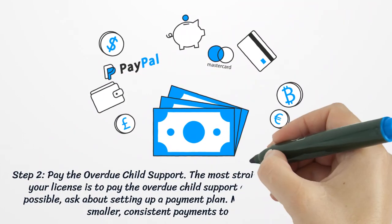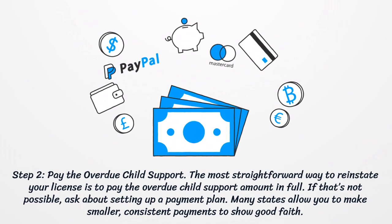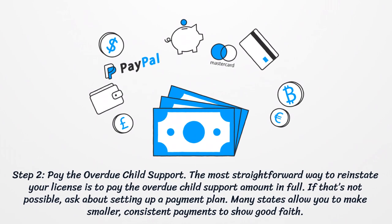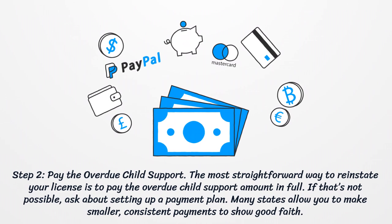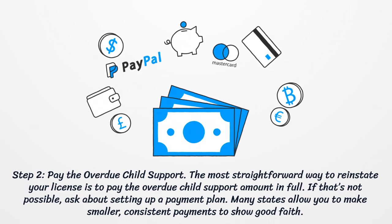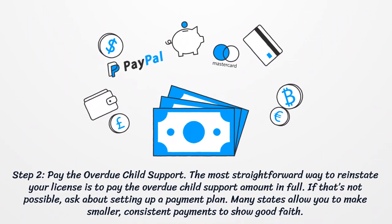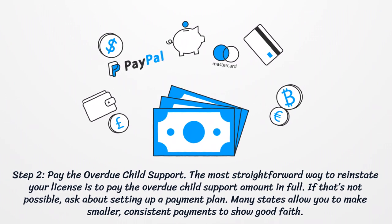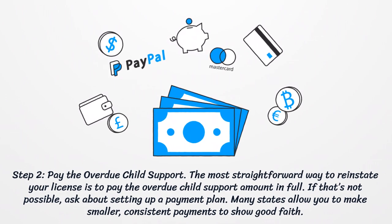Step 2: Pay the overdue child support. The most straightforward way to reinstate your license is to pay the overdue child support amount in full. If that's not possible, ask about setting up a payment plan. Many states allow you to make smaller, consistent payments to show good faith.